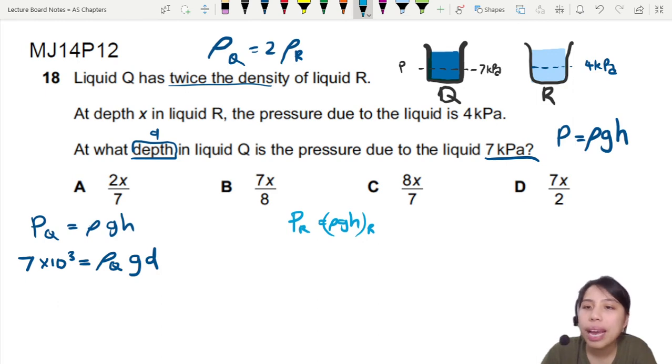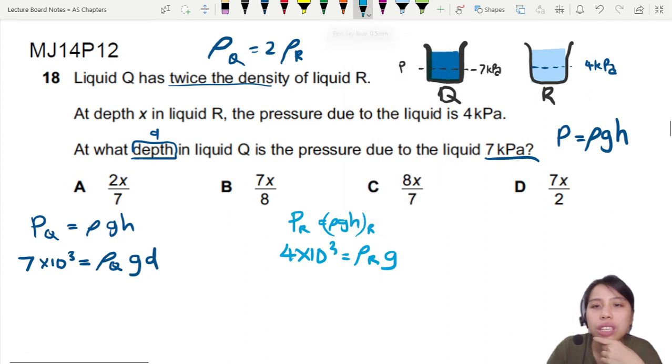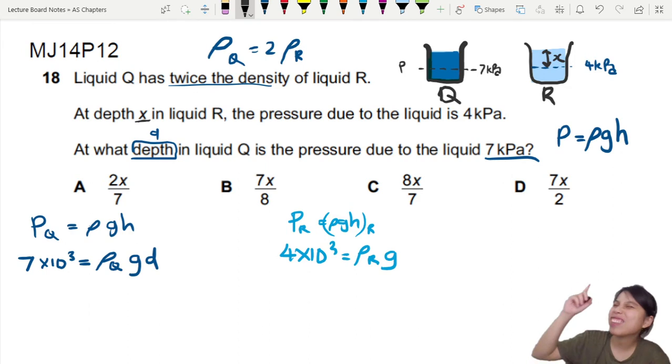So then we go P for R equals to rho GH. All this also for R. So that will be at a pressure 4kPa. Density of R times G. Can I change the darker color? Never mind. It's okay. Times a height. Why is this height? So we kind of assume that this height is going to be X. Because the depth X in liquid R. So the depth we are measuring that is X. See I draw a tiny little X up there. So we're just going to write X.